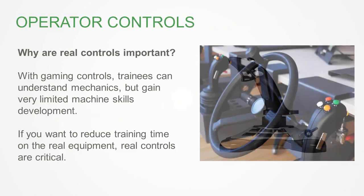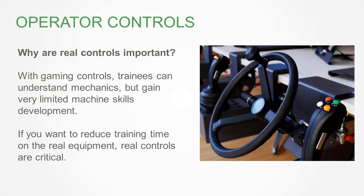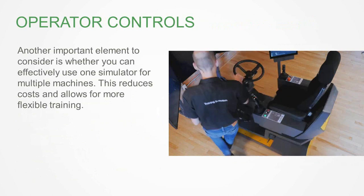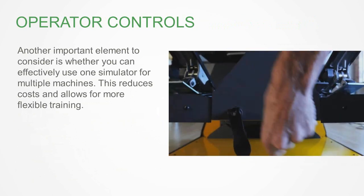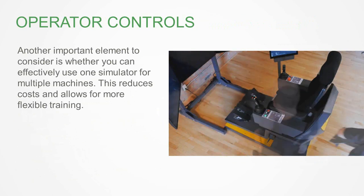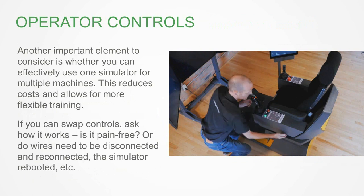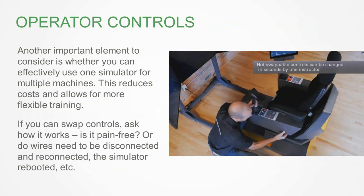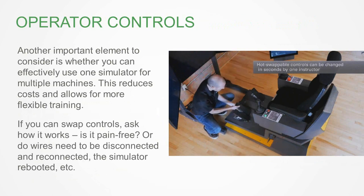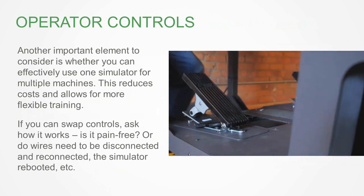Operator controls – this is how you touch the equipment. Gaming controls are good to learn that up is up and down is down, but what you really want is to experience as much of reality as you can. Touching real equipment controls gives the students a sense of how it feels and how the controls react, so when they get onto the real equipment, the controls have the same type of stiffness. Real controls are quite important. A lot of simulations have controls that you can swap out so one base can represent many different pieces of equipment – ask how difficult it is to swap them out, whether one person can do it, and whether there are any safety concerns like loose wires.